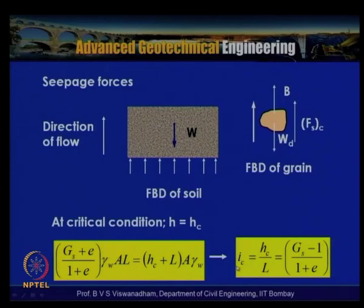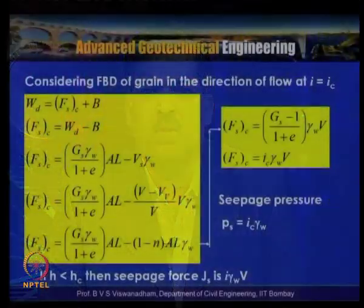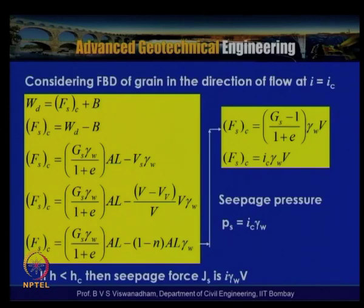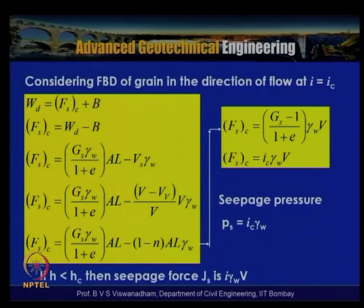This represents the saturated unit weight acting over area A and length l. With the upward pressure at this point being (h_c + l)·A·γ_w, simplification gives the critical hydraulic gradient i_c = h_c/l = (G_s − 1)/(1 + e), where G_s is the specific gravity of solid particles and e is the void ratio of the soil matrix. The seepage force per unit volume — the seepage pressure — has units of kN/m³.